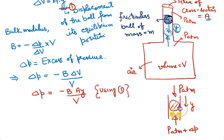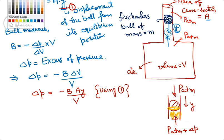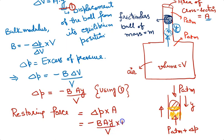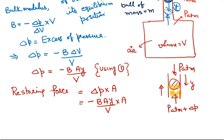That force can be calculated as pressure difference into area, and that force will be acting towards mean position and hence will behave like restoring force. Force may be written as delta P into A, where A represents area of cross section of neck. Delta P from this equation may be written as BA upon V. A into A will be A square. It means that restoring force F may be written as minus BA square upon V into Y.